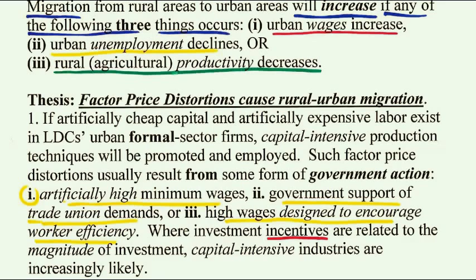As far as factor price distortions go, such distortions usually result from some form of government action: artificially high minimum wages, government support of trade union demands, or high wages to encourage worker efficiency. There is an interesting argument in labor economics called the efficiency wage hypothesis — if you pay a worker a really high wage, they will cherish the job so much that they don't want to lose it, and therefore will give 110% effort.